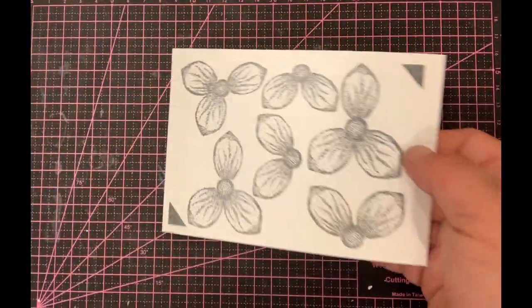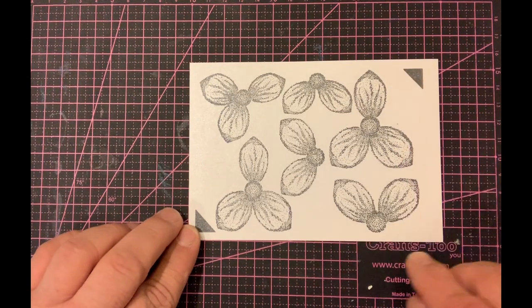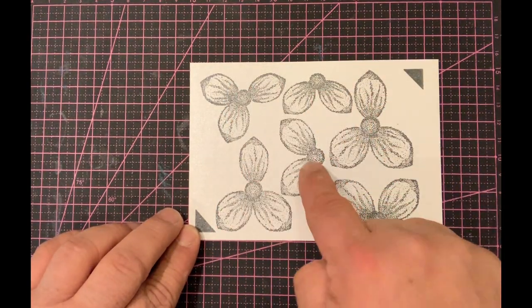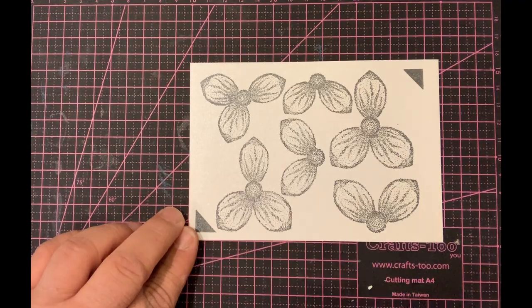I'll close my stamp press and take that out of the way. As you can see, you've got all six parts of the flower that you need, plus the two corners.